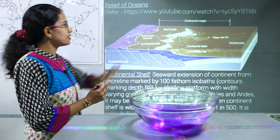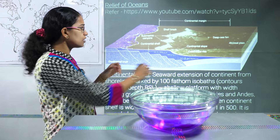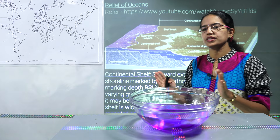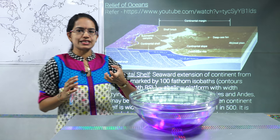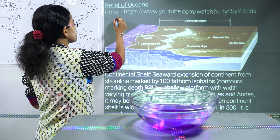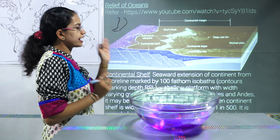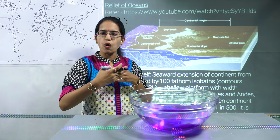We have a detailed lecture on each of these, so you can definitely go through that. Now coming on to the components of the ocean topography, the first component that we will talk about today is the continental shelf. As the name suggests, it is very close to the continent or the landmass. Now this continental shelf can be broad in certain places and less broad in others.